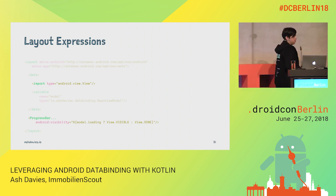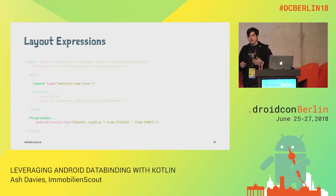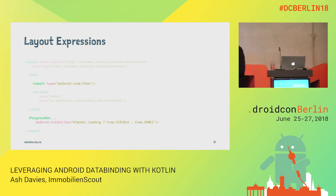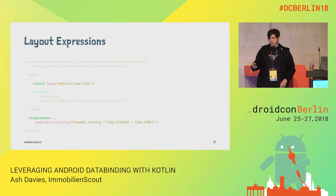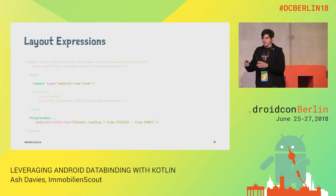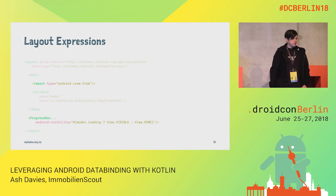The progress bar visibility will be updated as and when this value changes, because the generated data binding class will listen to changes respectfully. We also have to import View so that it knows to use View.VISIBLE — it's not clever enough to figure that out on its own.